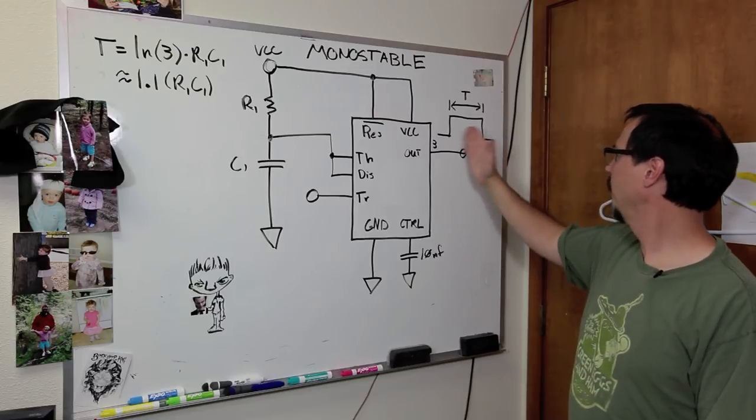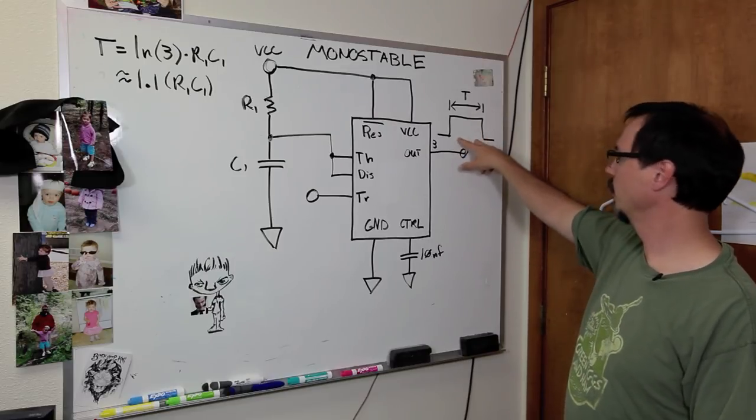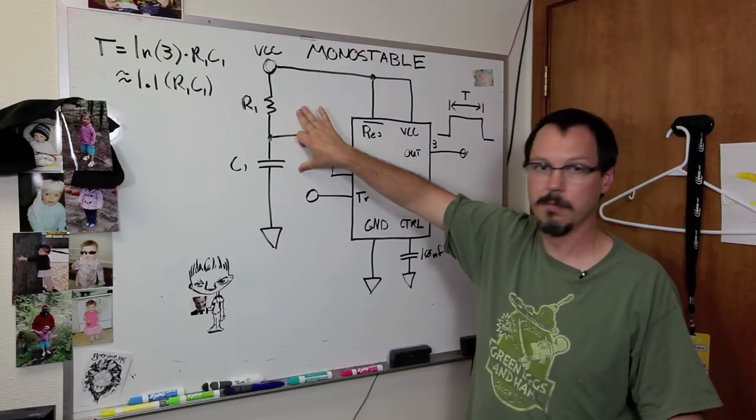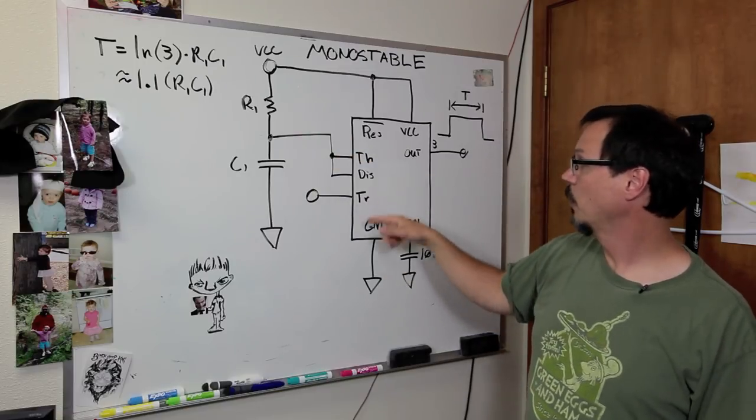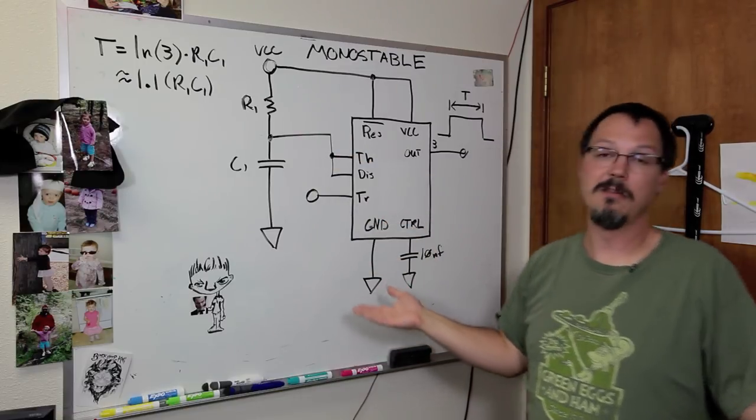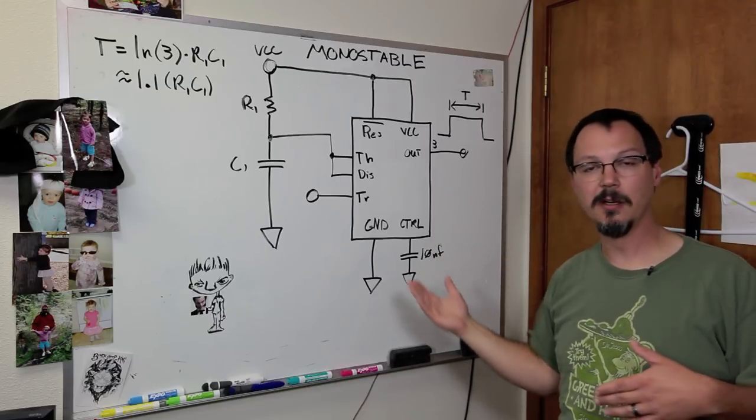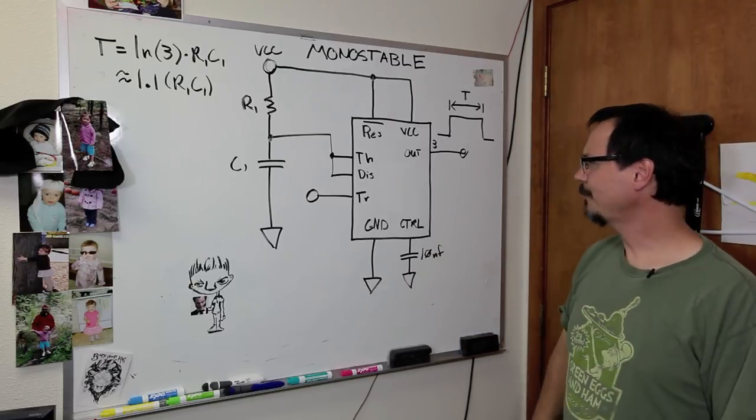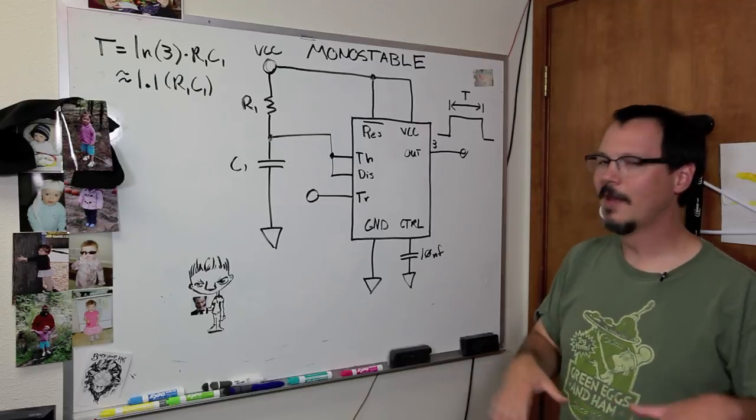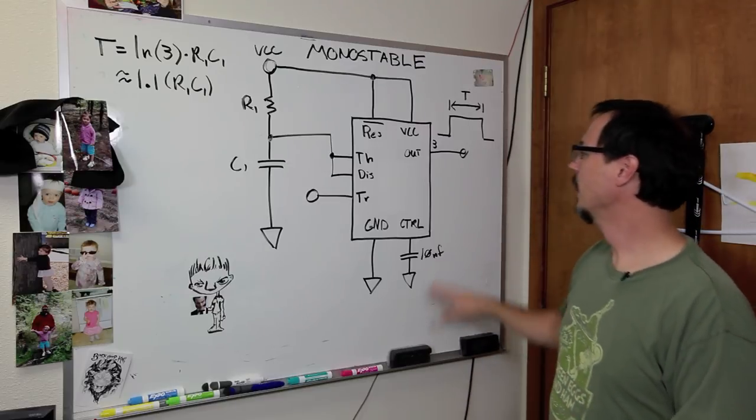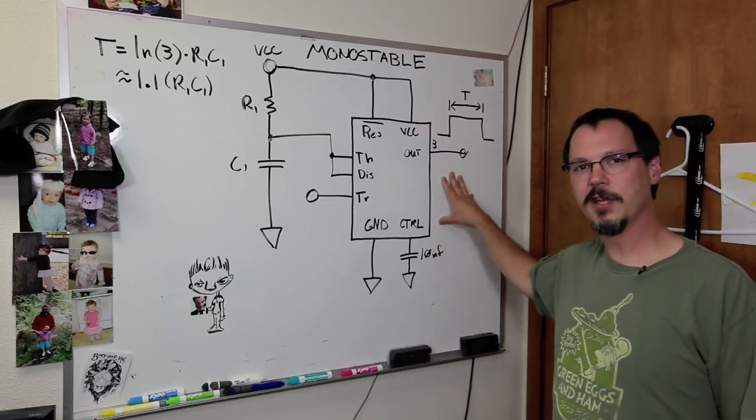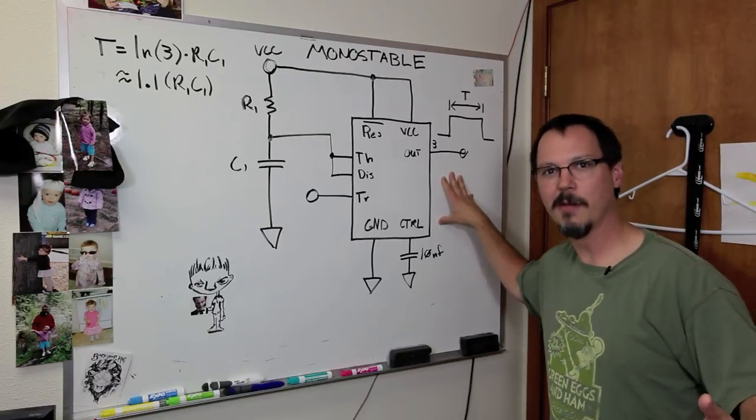So, what this is good for is for PWM, right? You can set up your pulse width with these two components. Simple enough. It also works really well as a Schmidt trigger. So, in case you need to filter noise out of another signal, good application. Sort of looks like a one-trick pony, though, huh? Well, hang with me, okay? The next example is a little more interesting, and then the big kahuna's coming at the end.